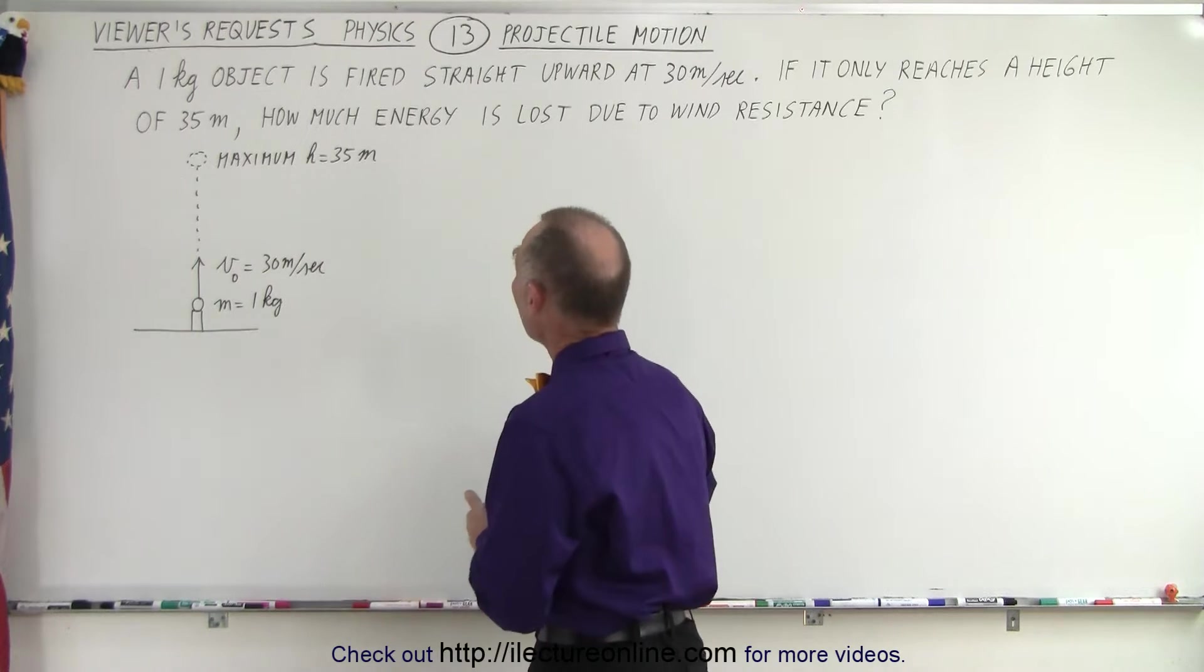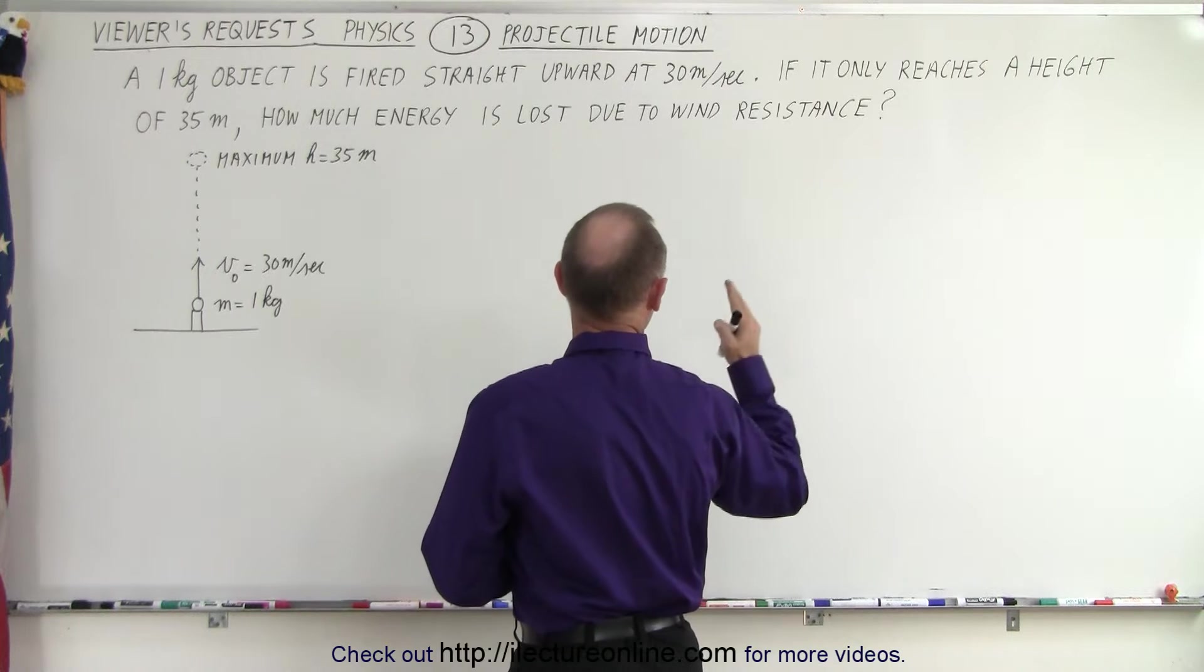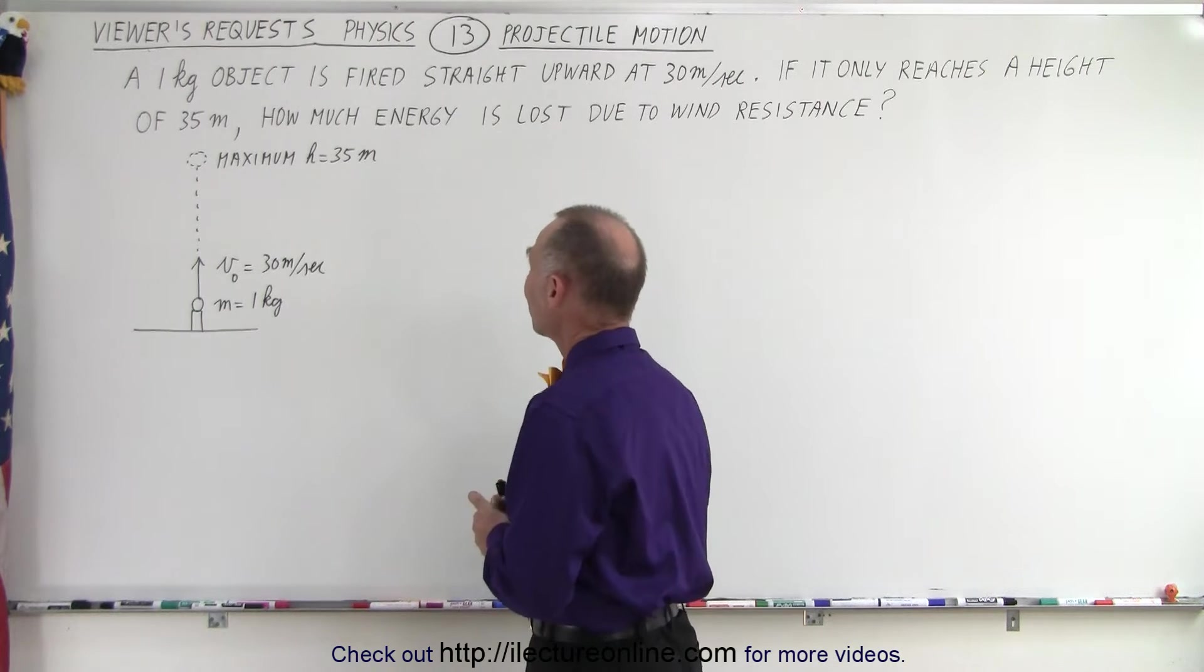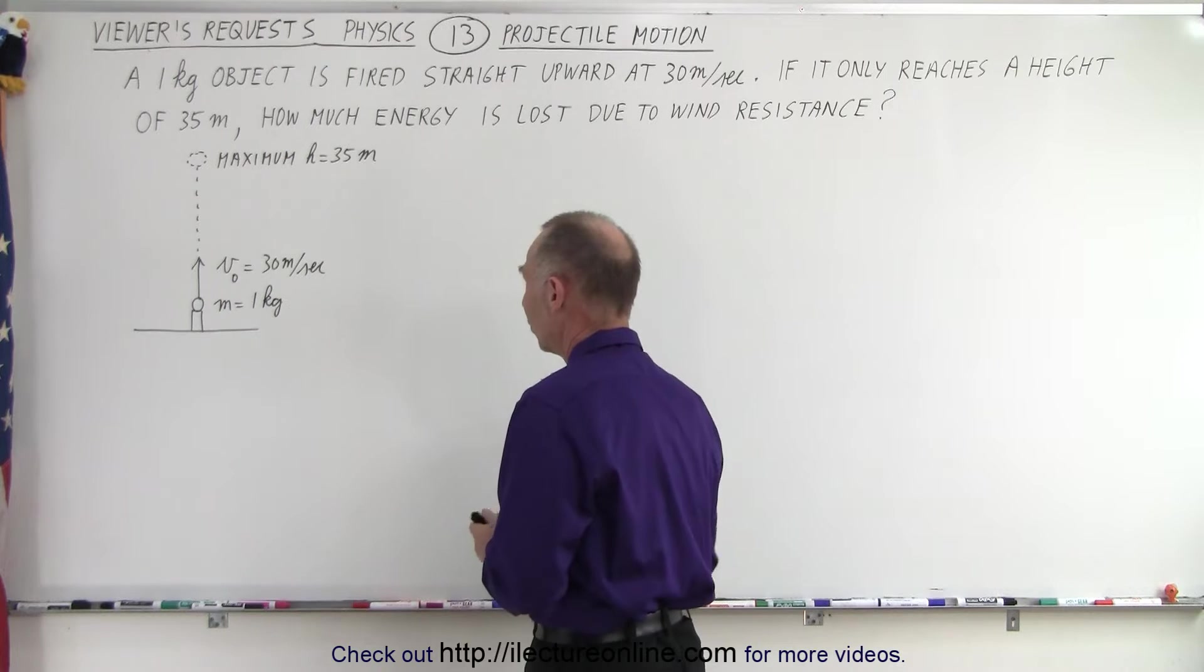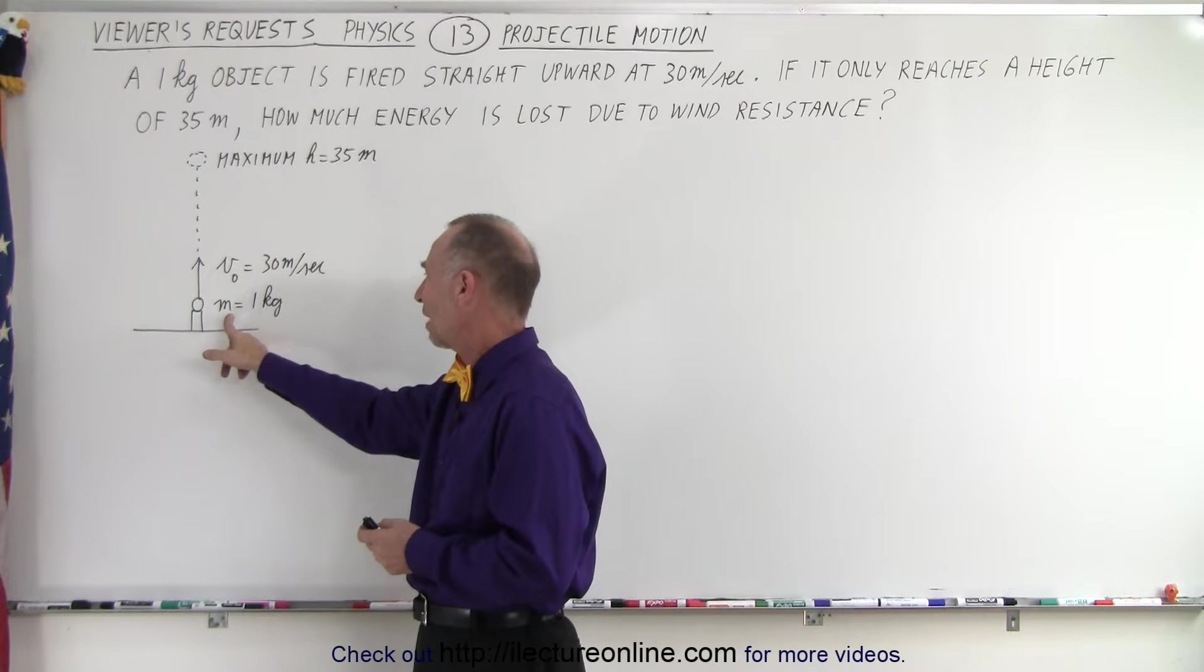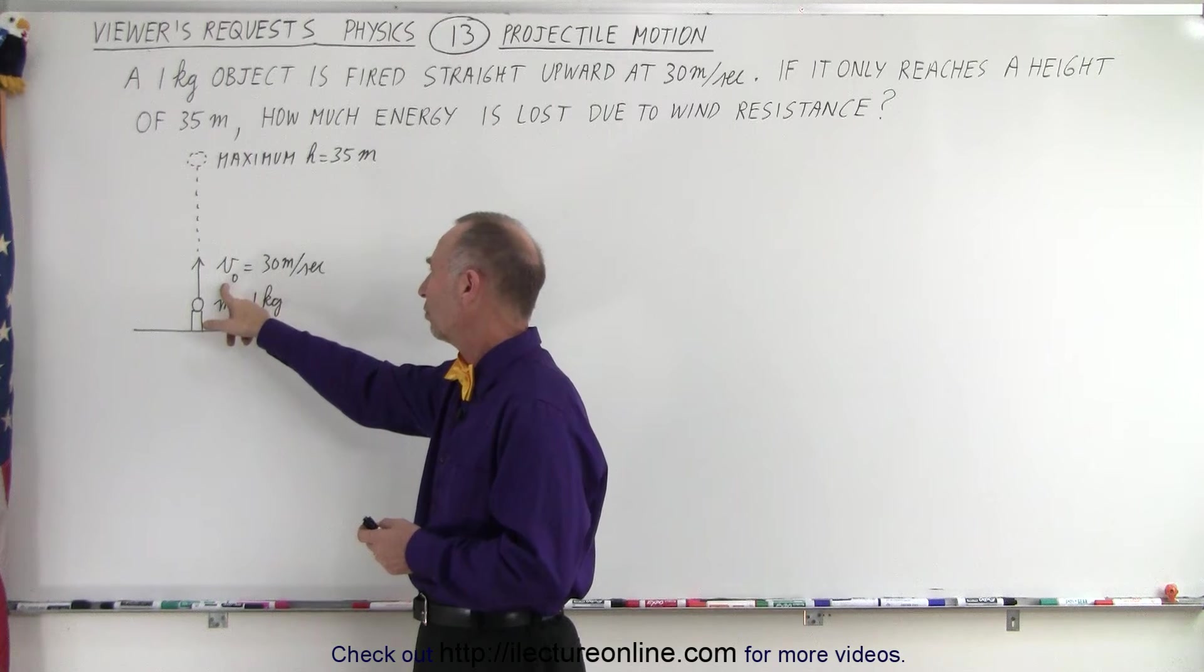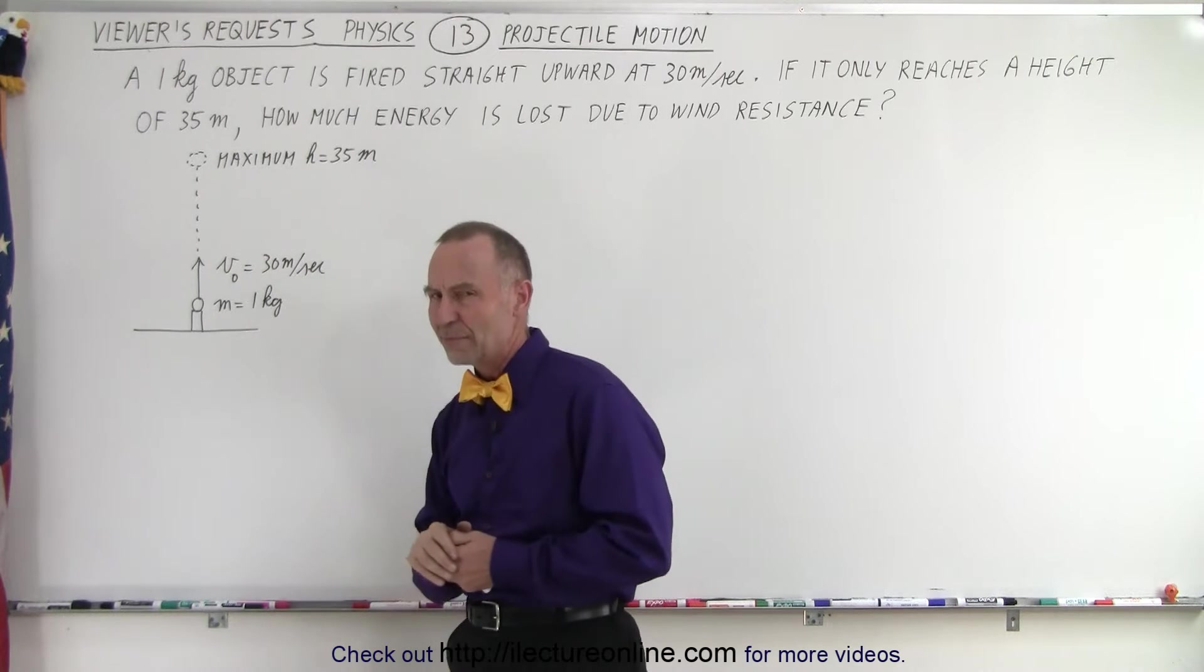It says that a 1 kilogram object is fired straight upward at 30 meters per second. If it only reaches a height of 35 meters, how much energy is lost due to the wind resistance? So here we have a quick picture. We have an object that's being fired upward. The object has a mass of 1 kilogram, an initial velocity of 30 meters per second, and it reaches a maximum height of 35 meters.